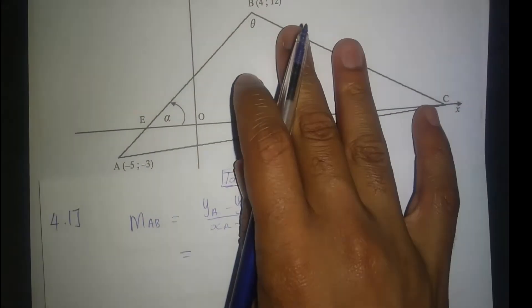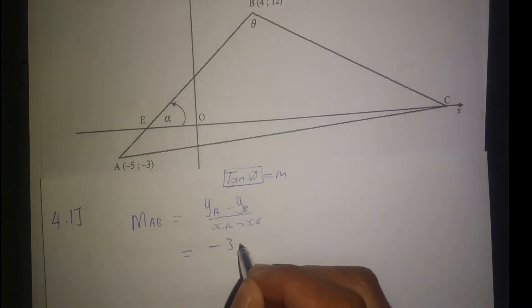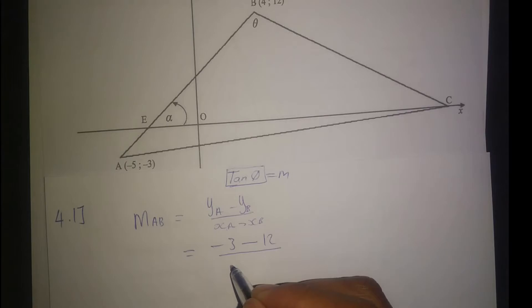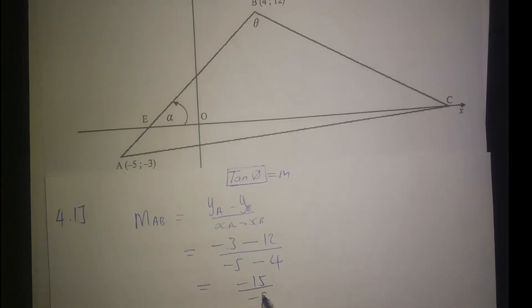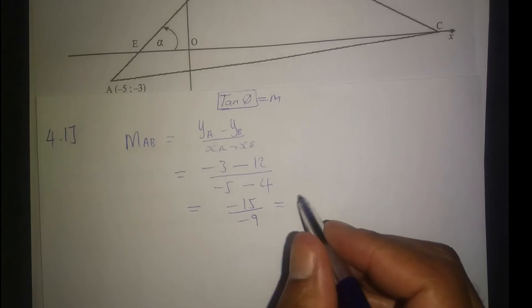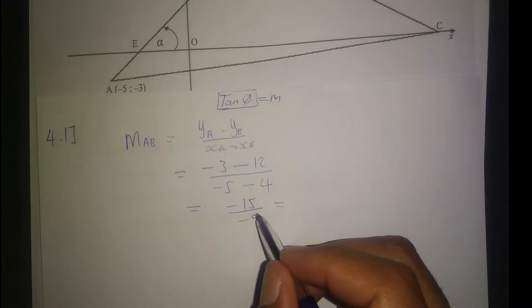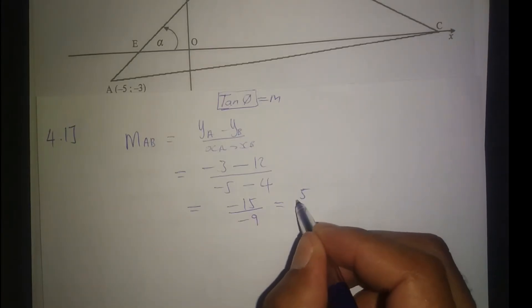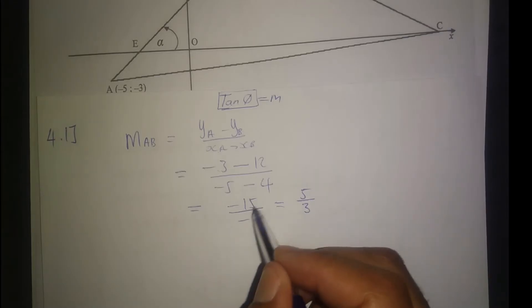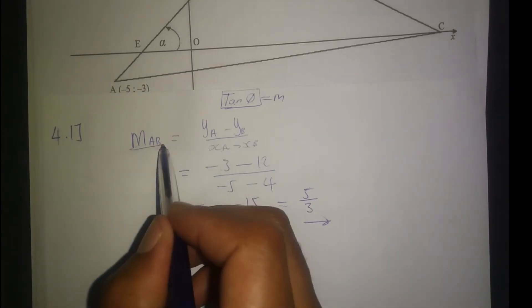So y_A minus y_B over x_A minus x_B. That's -3 minus 12 over -5 minus 4, which equals -15 over -9. Negative divided by negative is positive, so 15 over 9 simplified is 5 over 3. Therefore gradient AB is equal to 5/3.